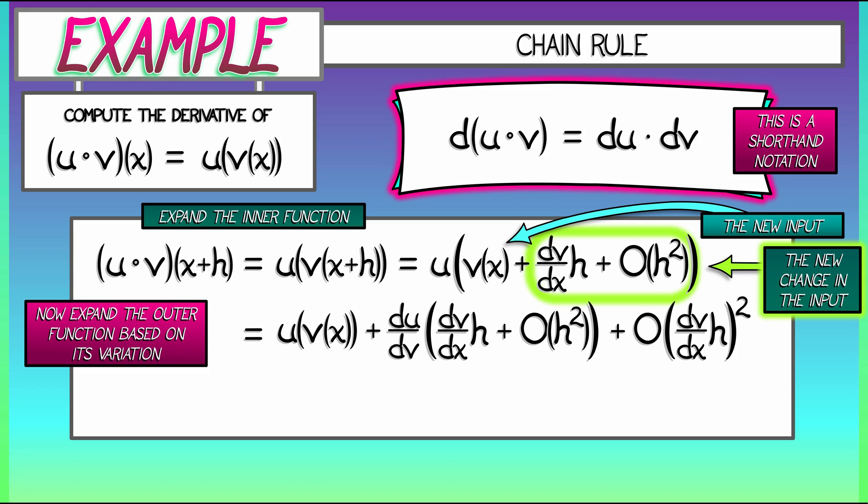But what do we do with that? Well, this dv/dx is just a constant at the particular input we're working with. So I have big O of some constant times h squared. That's really big O of h squared.